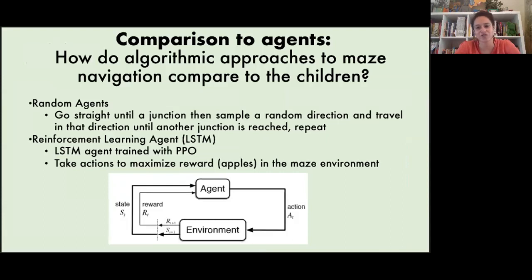Next, we ask how the trajectories of the children compare to different algorithmic approaches for exploring a maze. We compare the children to both random agents and reinforcement learning agents. The random agent picks the direction to walk in the maze and continues along that direction until a junction is reached. At the junction, it samples a new direction at random, and then again goes in that direction until the next junction. The random agent, however, doesn't see the apples in the environment the way the children do, so we also compare to a reinforcement learning agent with memory that takes into account the reward structure of our environment, in this case a positive reward for getting the apples, and selects actions to maximize its reward. We train the RL agents on a variety of other maze layouts and then evaluate their performance on the same mazes that the children do.